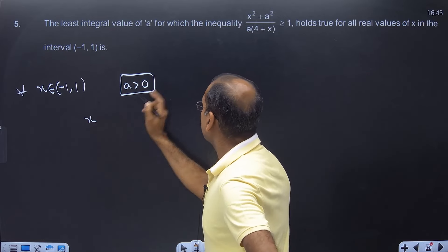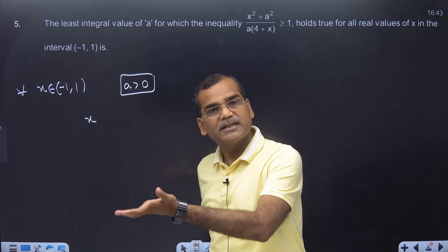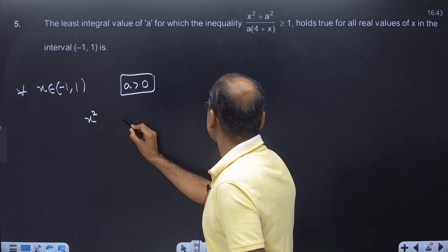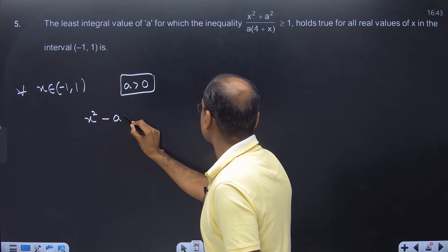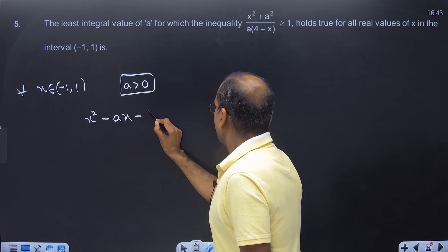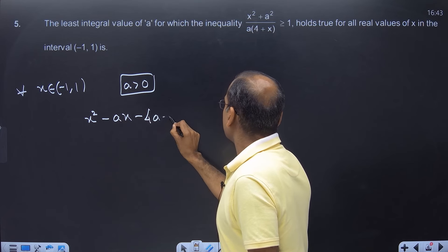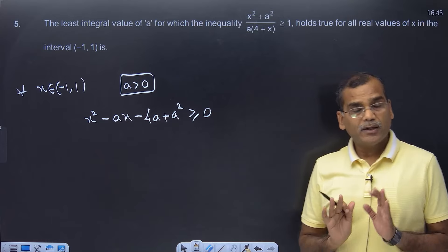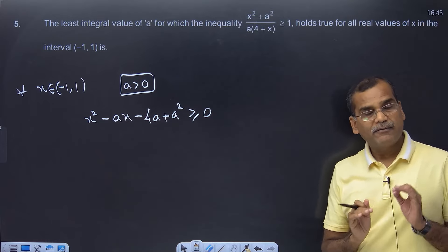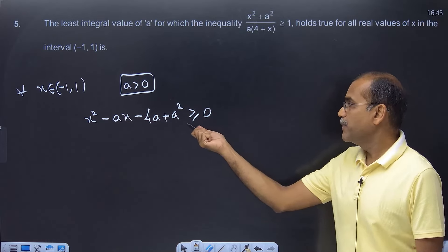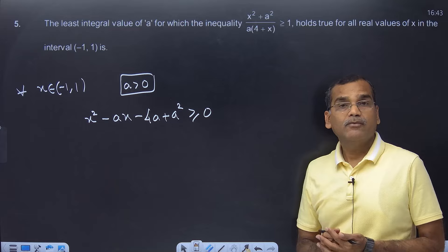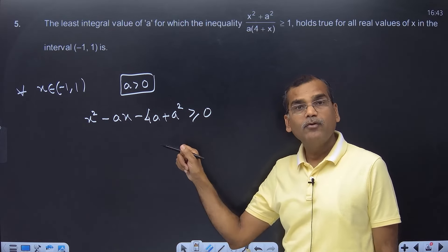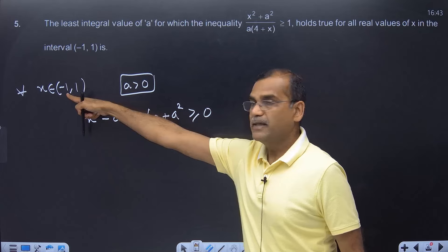I cross-multiplied and rearranged the inequality. Let's collect all terms on one side. After rearrangement, your inequality becomes this expression. Now what you want is for this inequality to be true for all x in the given interval.